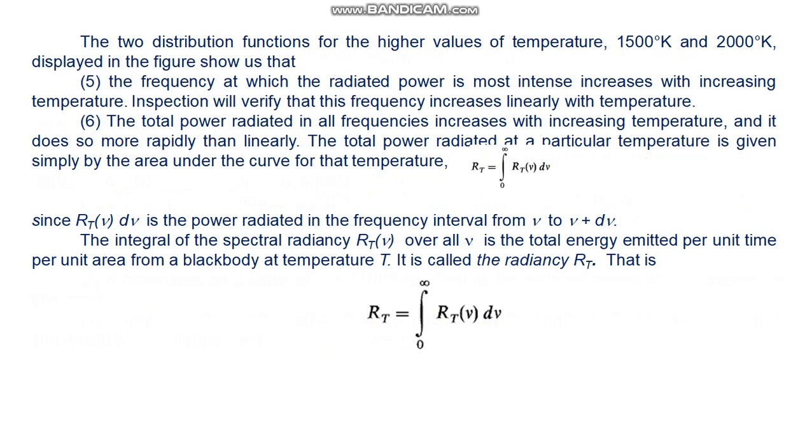The two distribution functions for the higher values of temperature, 1500 Kelvin degrees and 2000 Kelvin degrees, displayed in the figure show us that: Five, the frequency at which the radiated power is most intense increases with increasing temperature. Inspection will verify that this frequency increases linearly with temperature. Six, the total power radiated in all frequencies increases with increasing temperature, but it does so more rapidly than linearly. The total power radiated at a particular temperature is given simply by the area under the curve for that temperature.